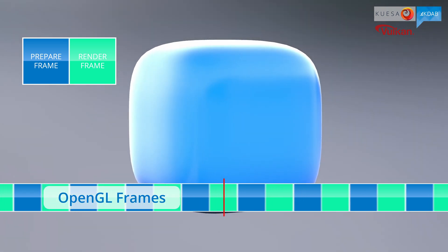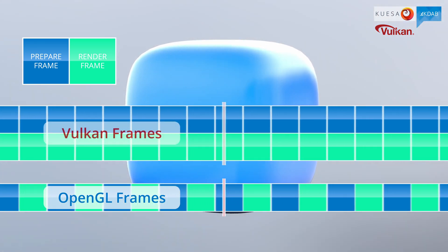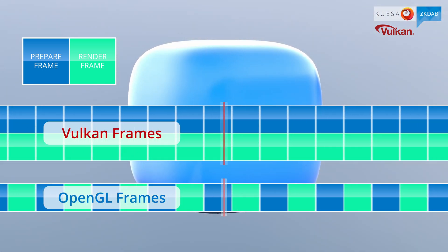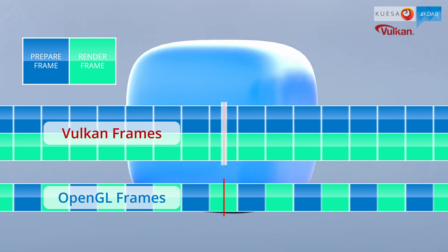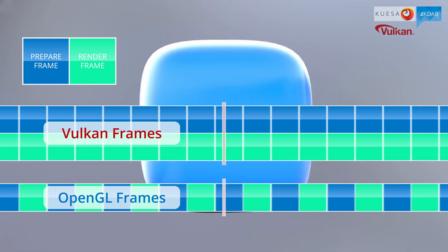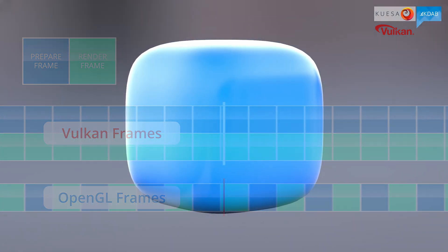It enables CPU and GPU to work in parallel. If you do it right, with Vulkan you can prepare the commands for the next frame on CPU, while the GPU is processing the commands for the previous frame. All this is important when dealing with low-level hardware, for example embedded boards, so you can get the last bit of performance out of your device.